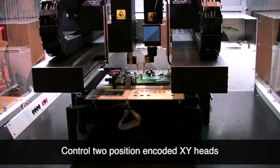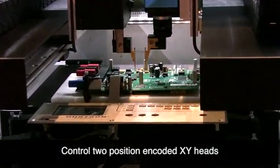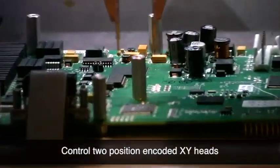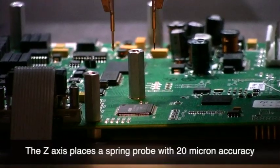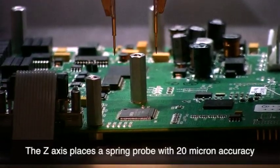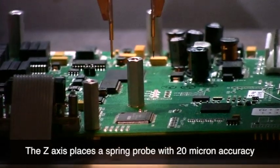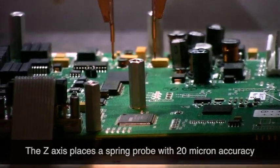The AXS DH consists of two heads moving in an encoded XY axis with a vertically placed probe on the Z axis. The probes can be placed on test points with 20 micron accuracy, so probing fine-pitched surface mount devices is not a problem.